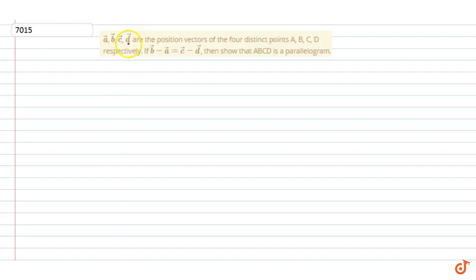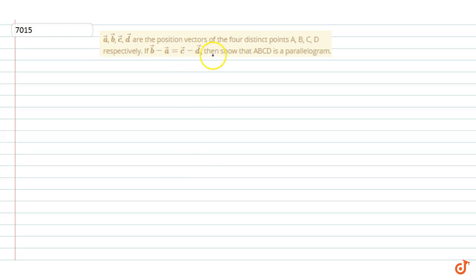In this question, if a, b, c, d are the position vectors of four points A, B, C, D respectively, and if vector b minus vector a equals vector c minus vector d, then show that ABCD is a parallelogram.